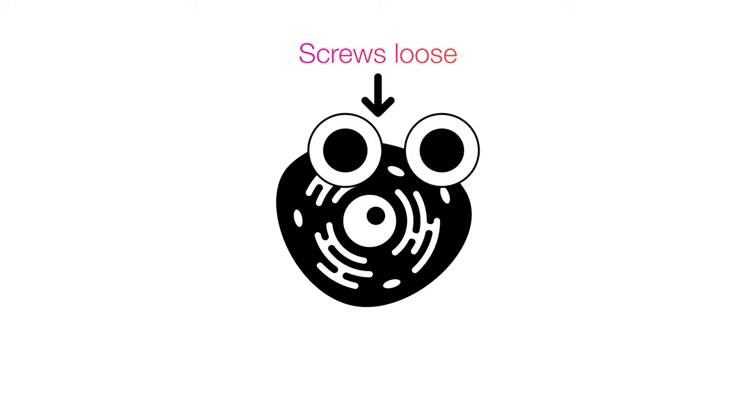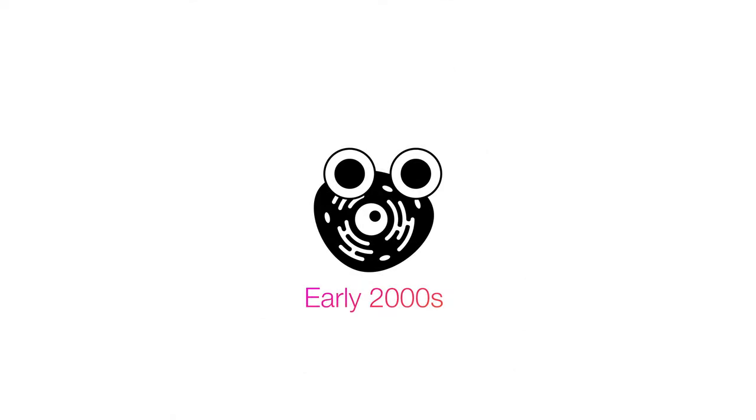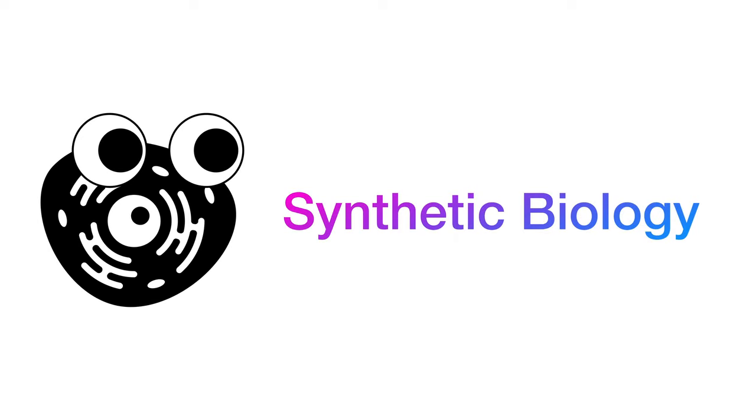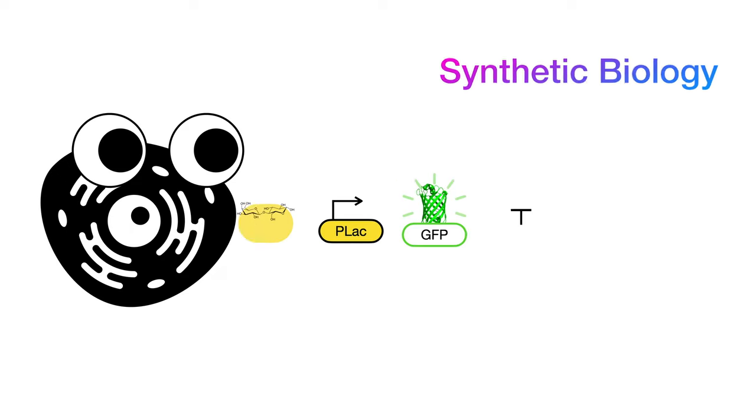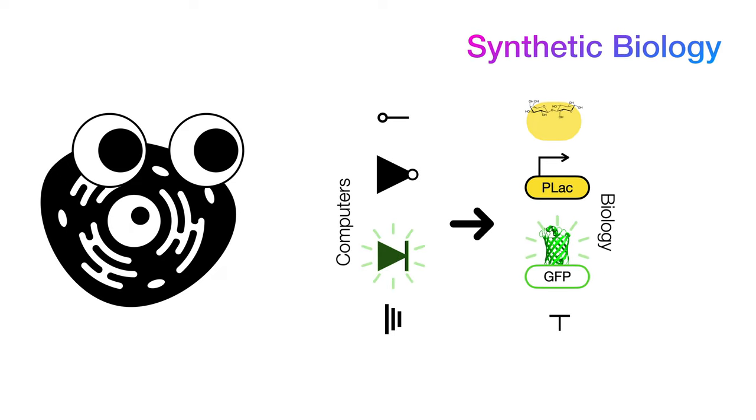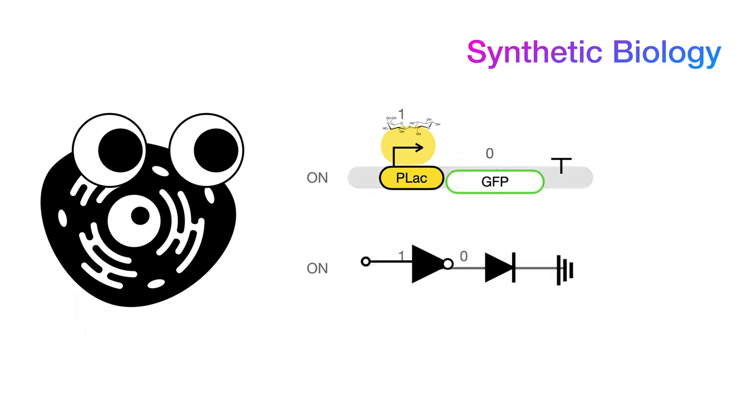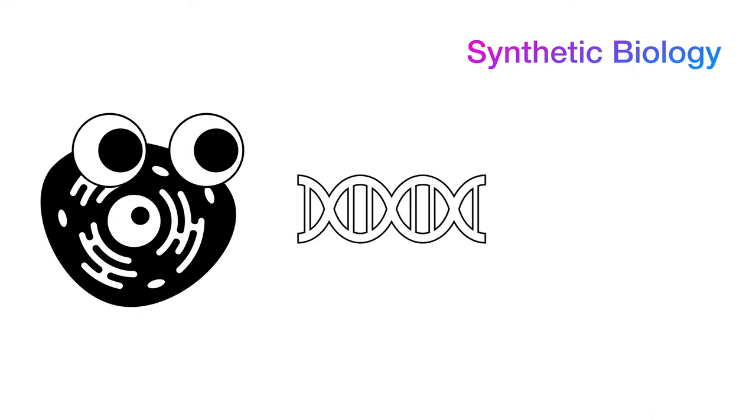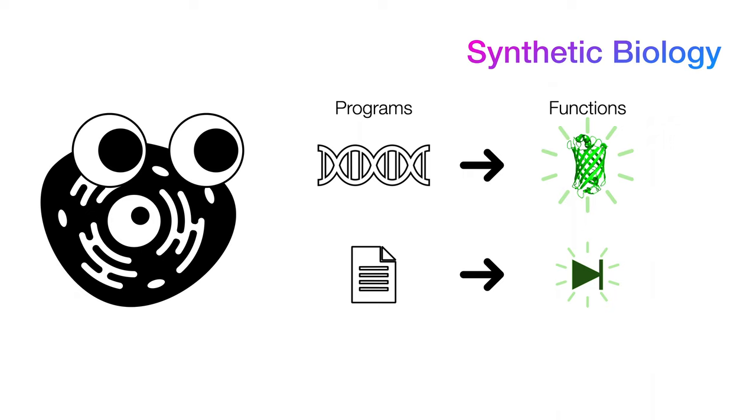But to understand why anyone in the right mind would think of using biological computers, let's jump back to the year 2000. Back then, there has been an emerging field known as synthetic biology. This field is all about viewing parts of an organism as if they were electronic parts, and we can combine these parts, like Legos, in order to program living cells to do custom things that we want. To these biologists, DNA is just a long string of instructions, blueprints if you will, that contains the information to produce proteins,